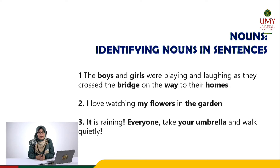In the sentence, 'I love watching my flowers in the garden,' the nouns are I, my flowers, and the garden. And finally, in the sentence, 'It's raining. Everyone, take your umbrella and walk quietly,' the nouns are it, everyone, and your umbrella.